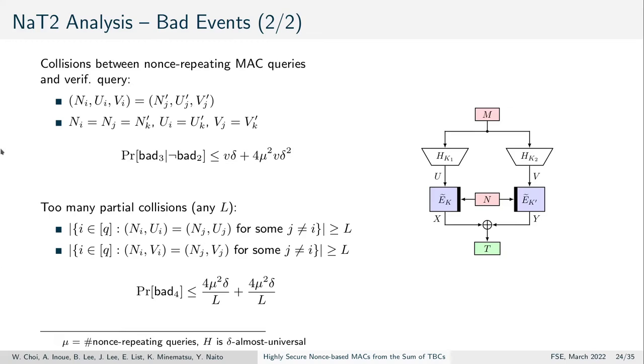Third, we consider collisions between nonce-repeating MAC queries and verification queries. And finally, we introduce a parameter L and upper bound the probability that we arrive at too many partial collisions in either u or v, that is, in the hash values.